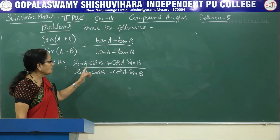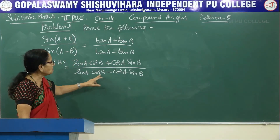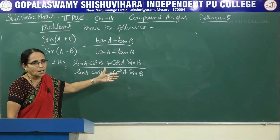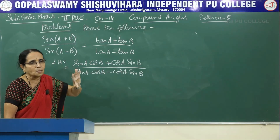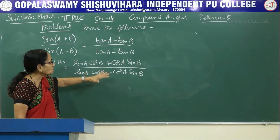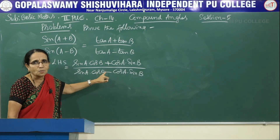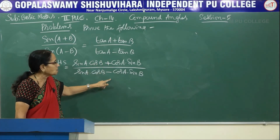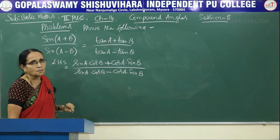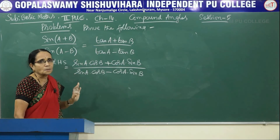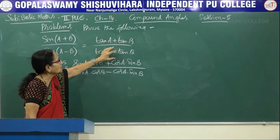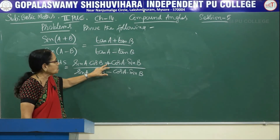Start with the left hand side. Expand the numerator: sinA·cosB + cosA·sinB. The denominator: sinA·cosB minus cosA·sinB. In the earlier problems the denominator had only one term so we could split. Here both numerator and denominator have two terms, so we cannot simply divide.